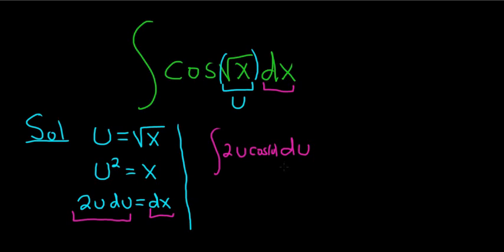Let's use tabular because it's faster. So tabular integration works whenever one of the factors after repeated differentiation is eventually 0. So 2u, if you keep differentiating it, you get 0 eventually, right? Because the derivative of 2u is 2 and the derivative of 2 is 0.